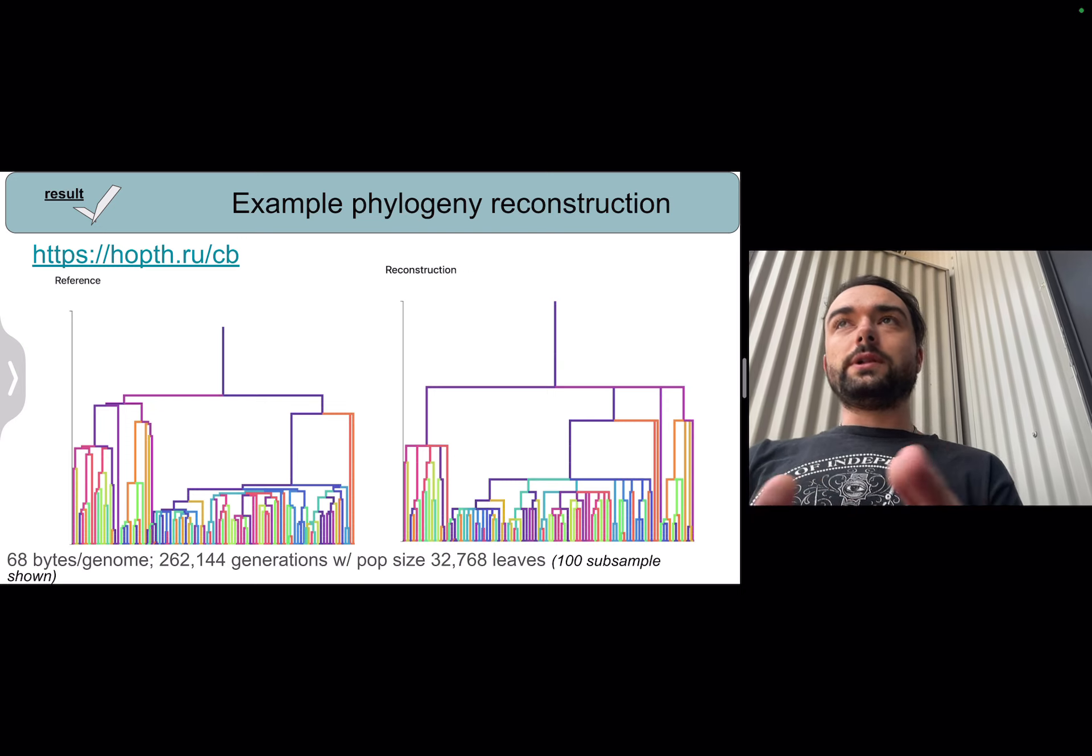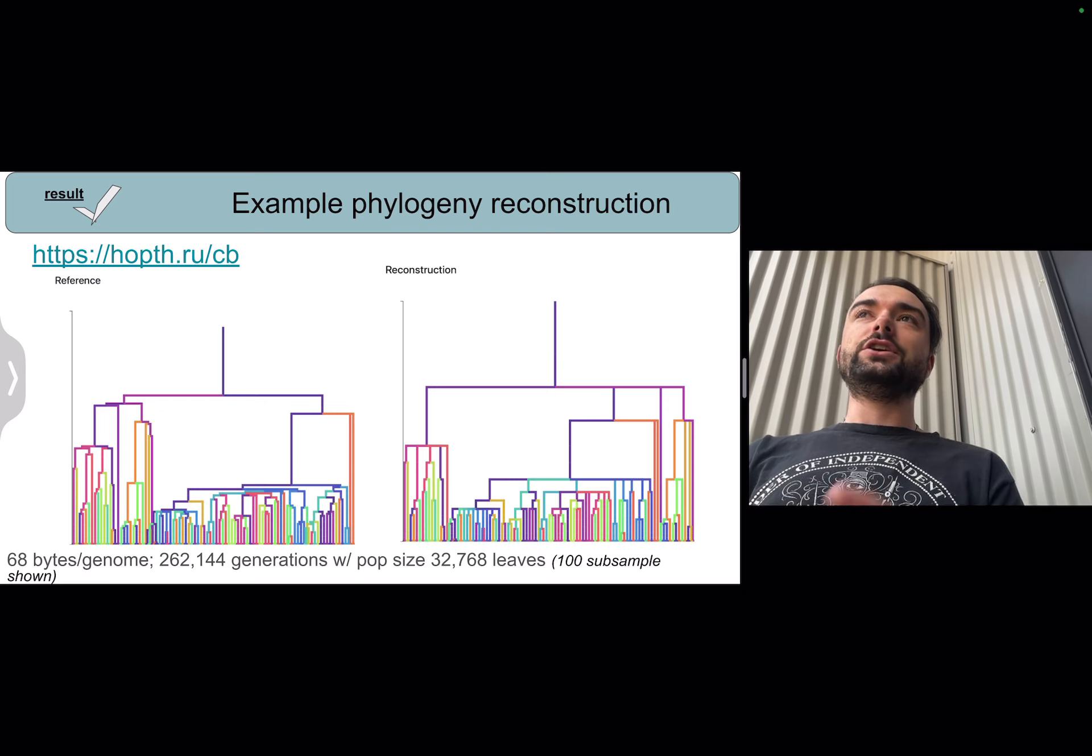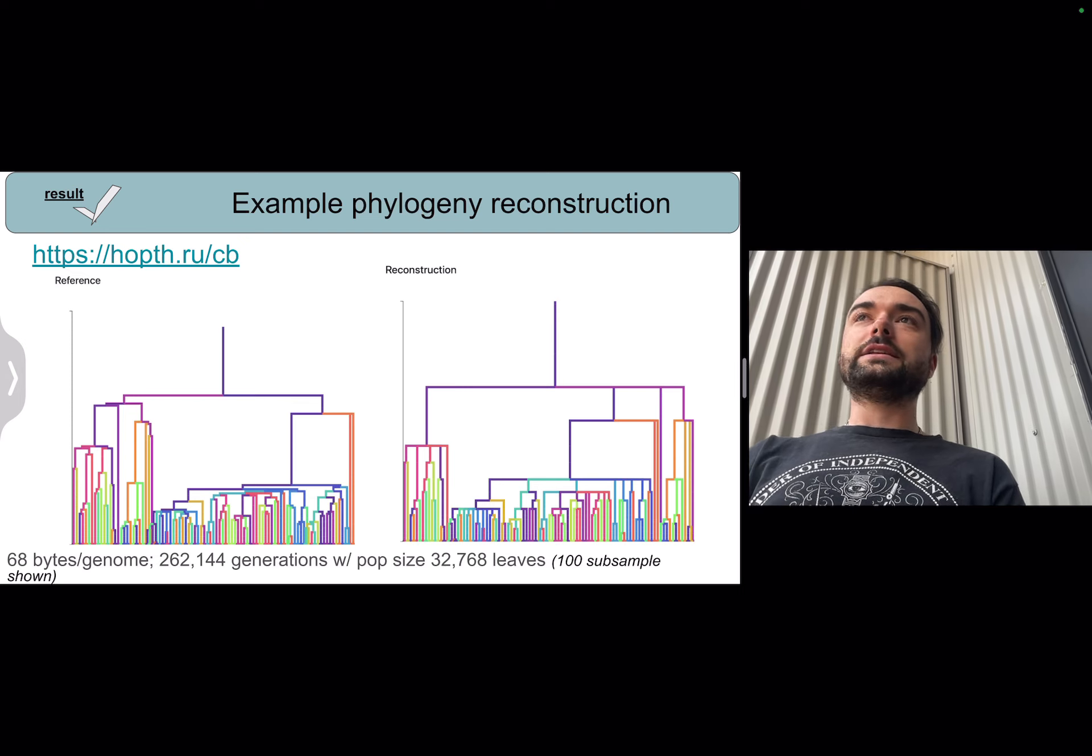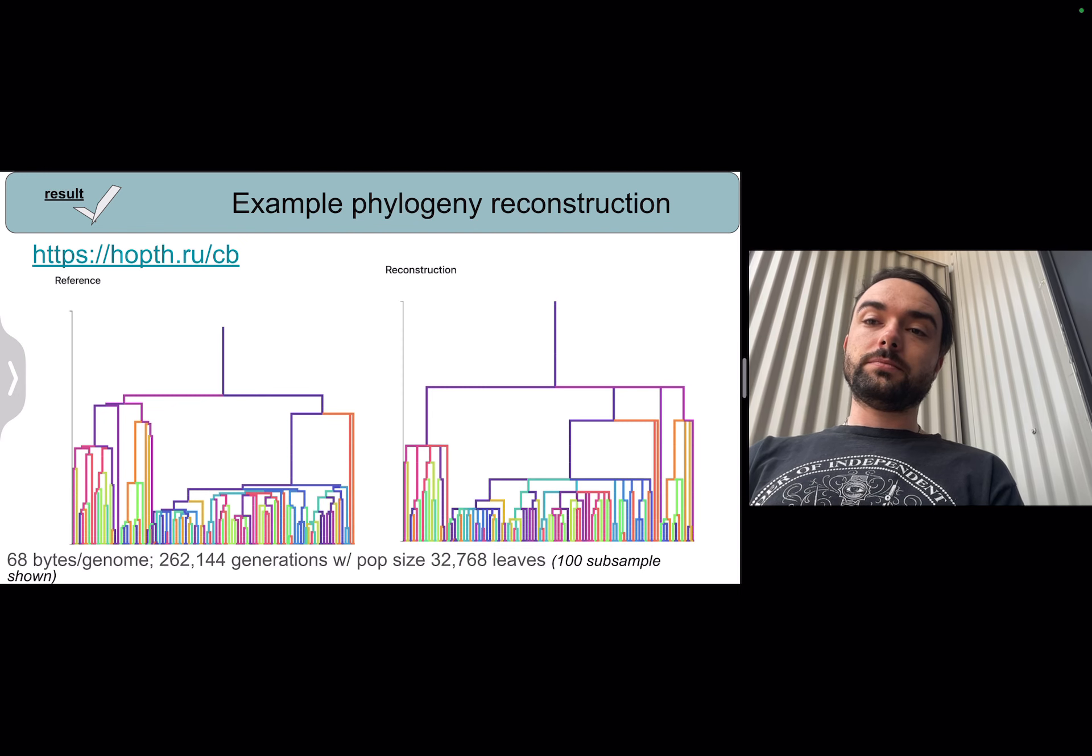The annotations were about 68 bytes per genome. However, you can get reasonable quality reconstructions from annotations as small as around 256 bits. So this annotation scheme can be really lightweight and efficient.